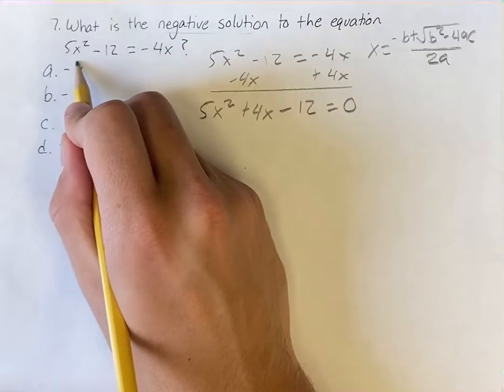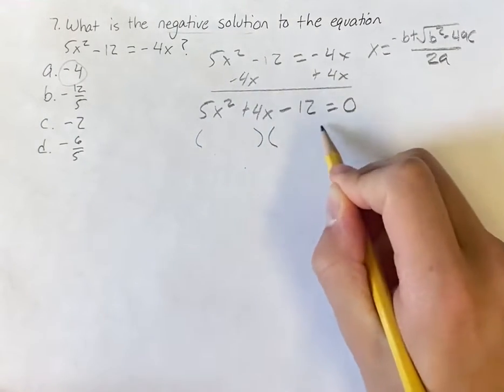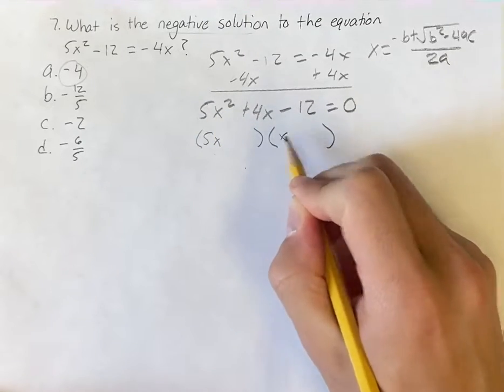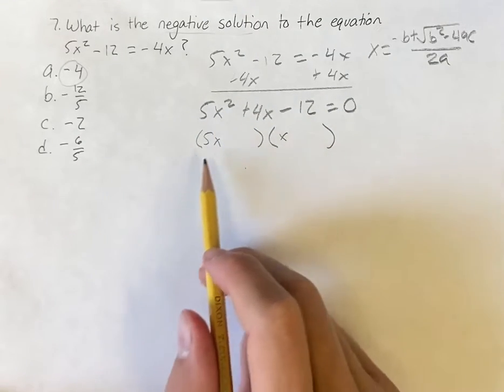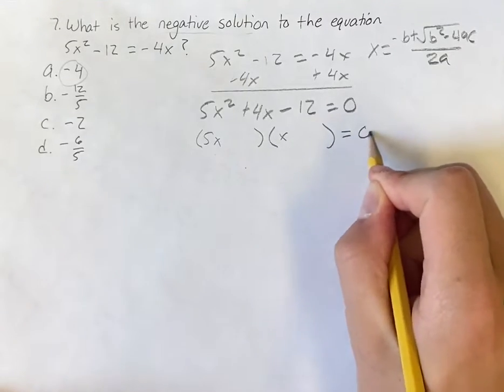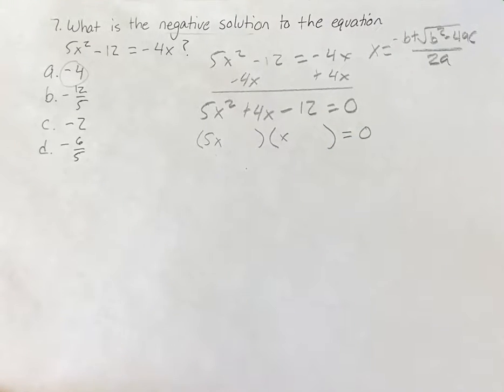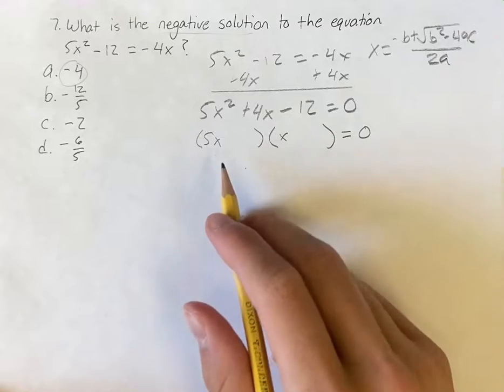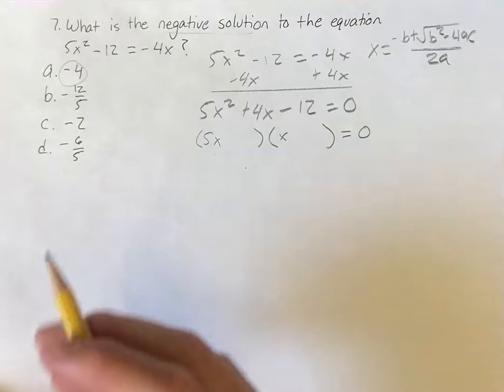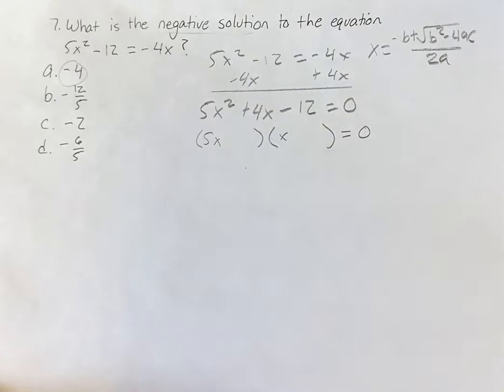Okay, so if we want to get this into the form 5x times x, 5x plus a number, 5x minus a number, times x plus a number, x minus a number, is equal to 0. Then this is going to give us our solutions. This is factoring it out, because one of these has to be 0 for the overall product to be 0.